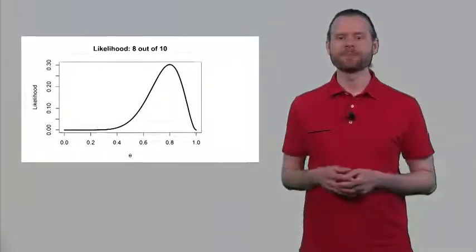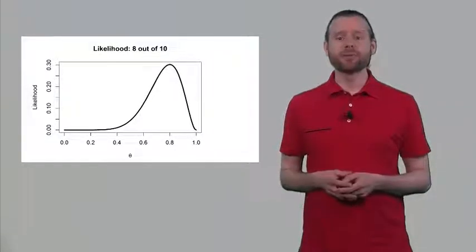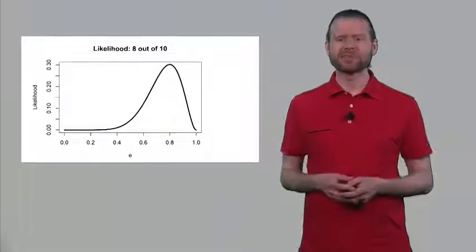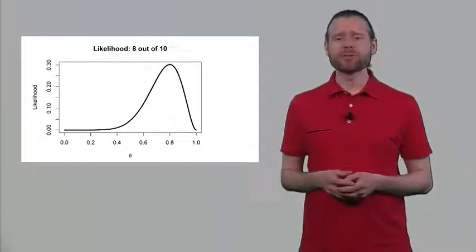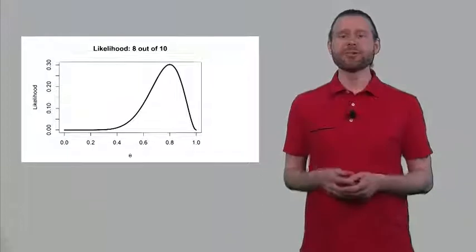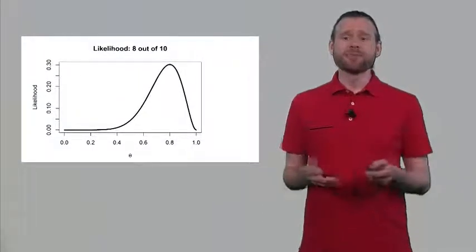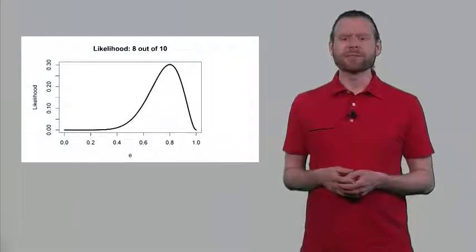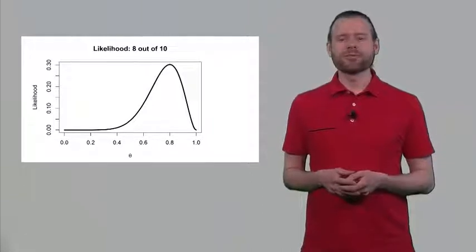So the extremes are not possible and you can see that the likelihood there is essentially 0. The most likely true population parameter, based on the data we have, is 0.8, because this is exactly what we observed — so this is the maximum likelihood. But some values just around it are also still quite plausible. A value of 0.6 is still quite probable in this case as well.